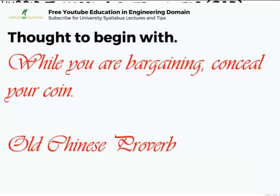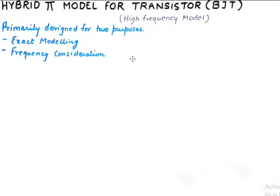The hybrid pi model is primarily designed for two purposes. It is a method of more exact modeling and it takes into account all the frequency considerations.